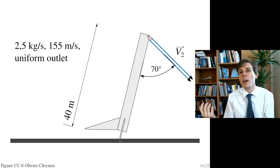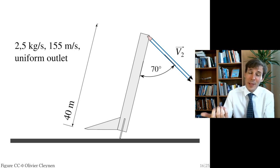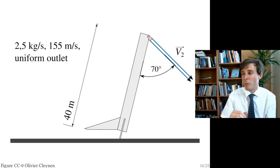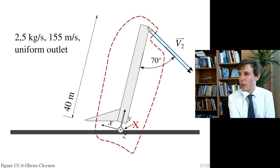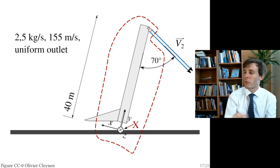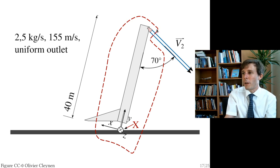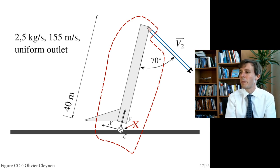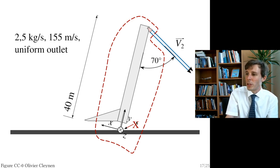We want to calculate the net moment applied to the fluid, knowing the moment exerted by the fluid on the rocket is exactly the opposite. As usual, we draw a control volume, making the outlet perpendicular to the velocity vectors to simplify the calculation greatly.